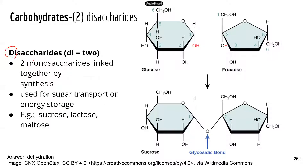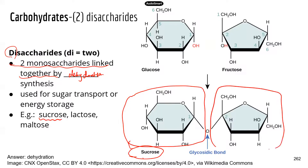Disaccharides — di means two — so these molecules have two monosaccharides joined together by dehydration, or condensation synthesis. These disaccharides have similar functions: they're used for sugar transport and energy storage. A good example is sucrose — that's the common sugar we use for cooking and baking. Sucrose has two monosaccharides linked together: glucose and fructose. So you actually probably ingest a lot of fructose if you cook or bake with sugar, because fructose makes up half of the sucrose — the table sugar that you use.